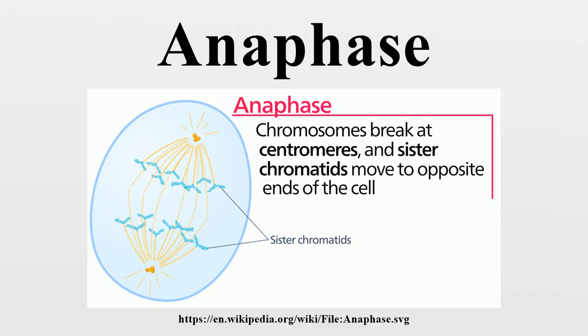Anaphase accounts for approximately 1% of the cell cycle's duration. It begins with the regulated triggering of the metaphase-to-anaphase transition. Metaphase ends with the destruction of B-cyclin.